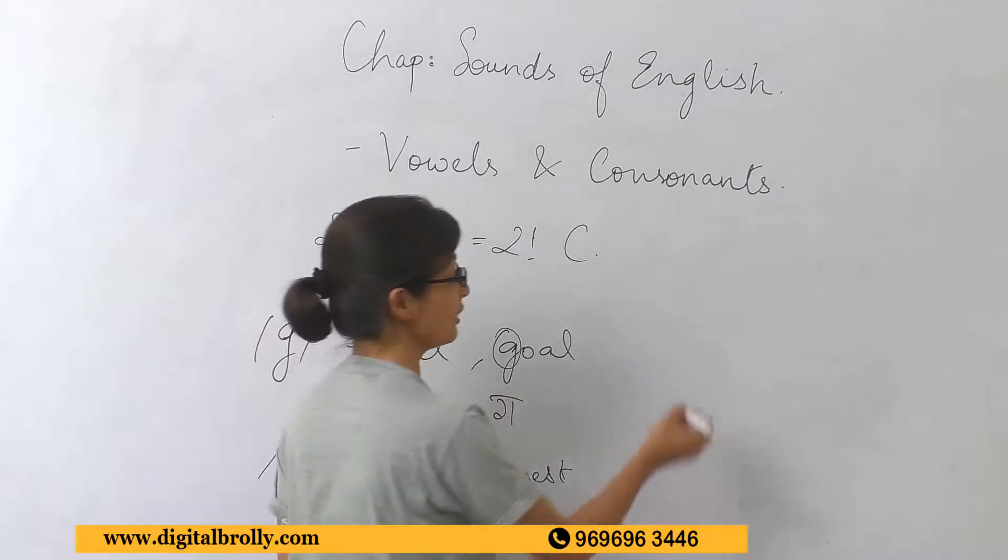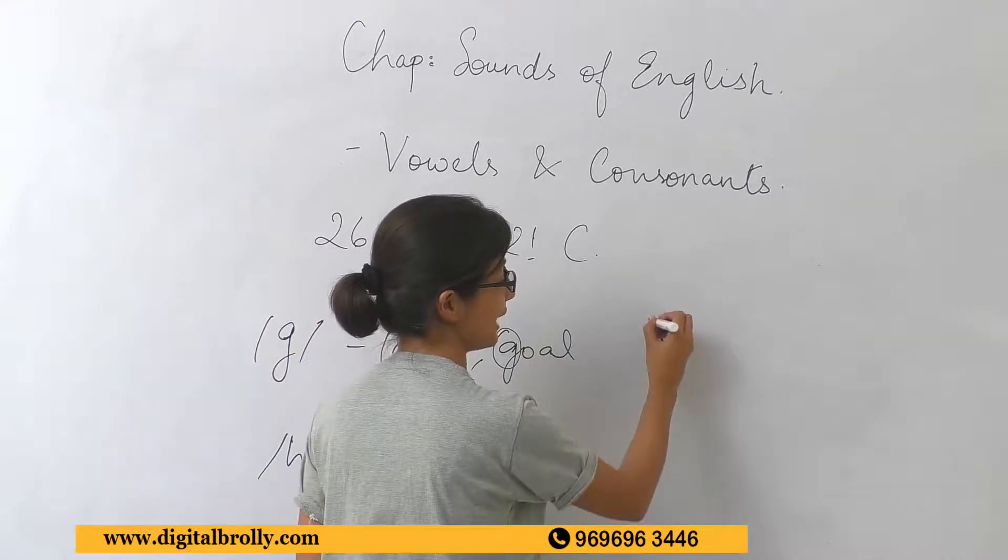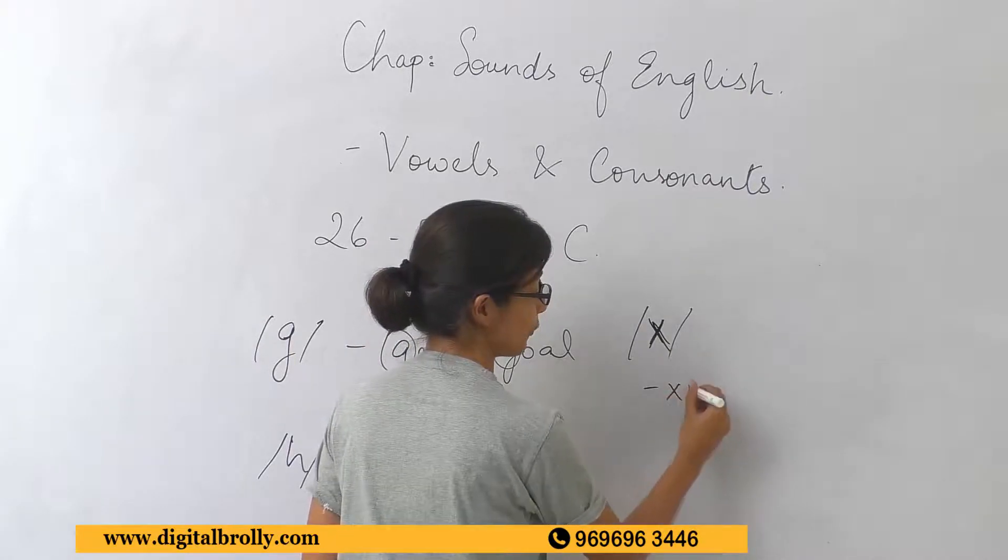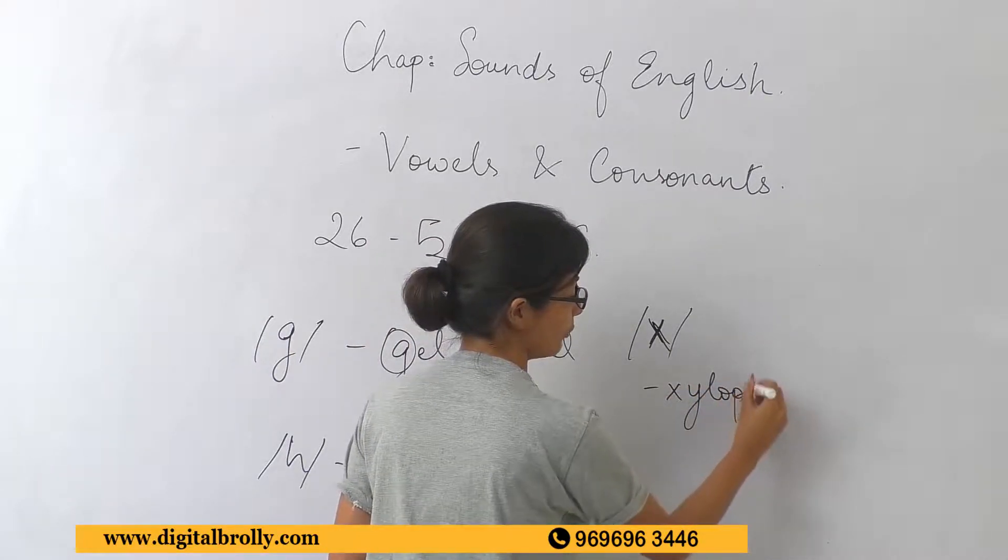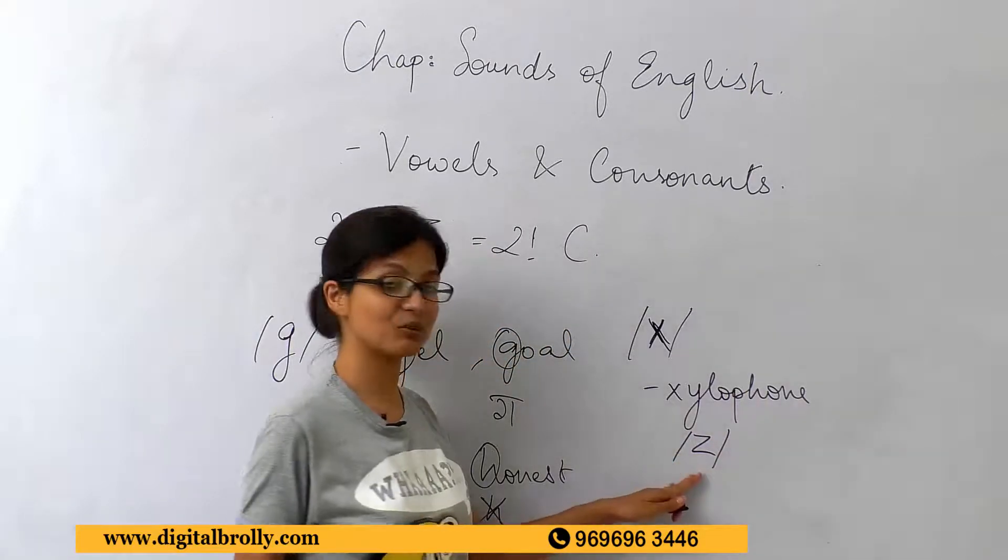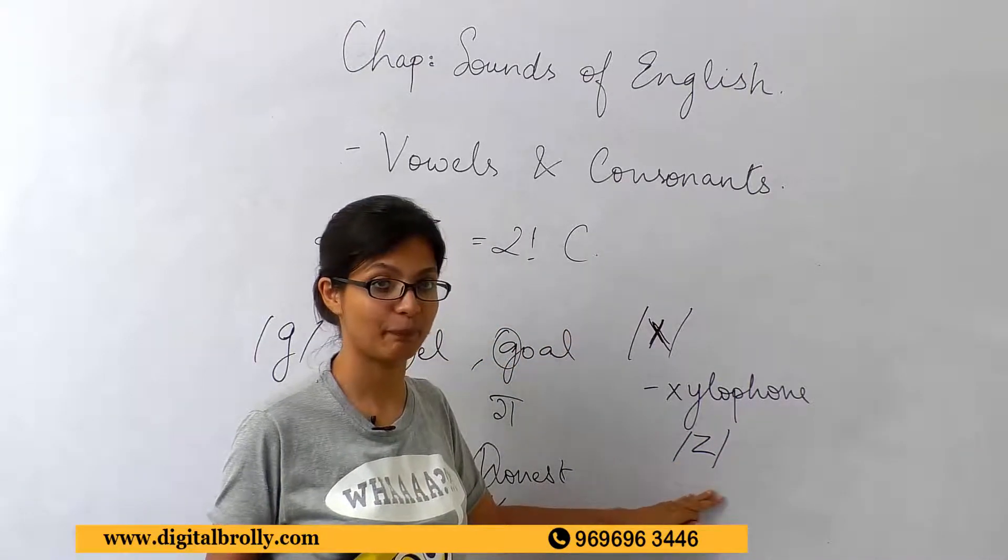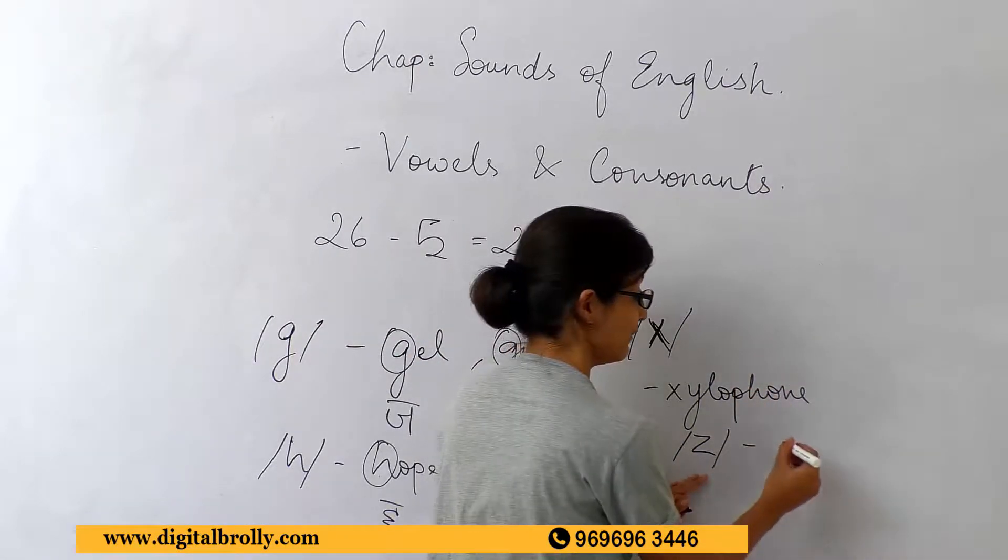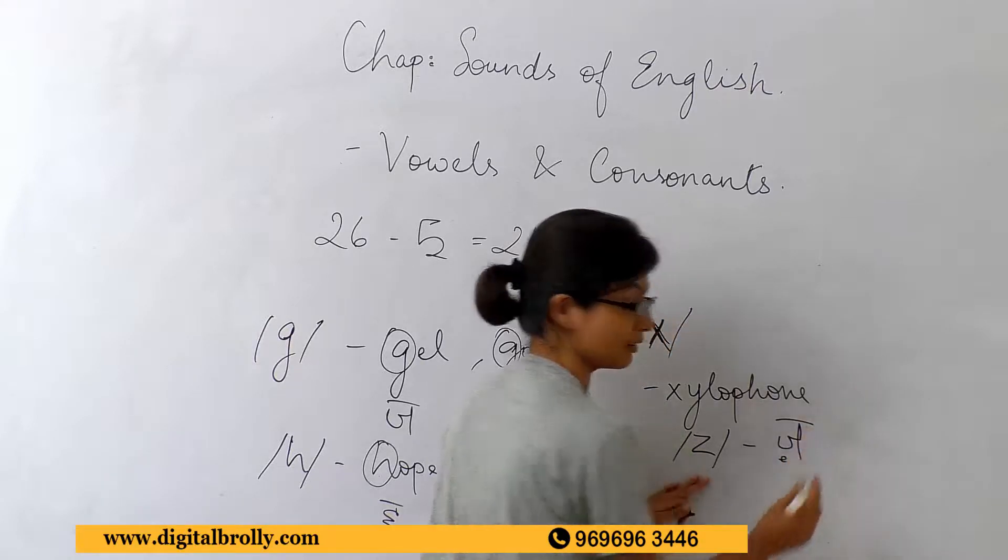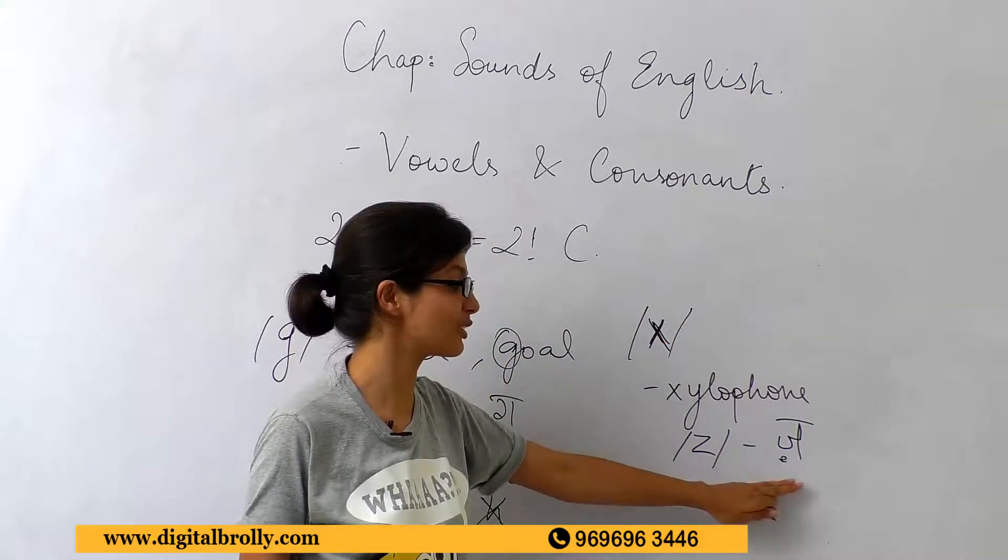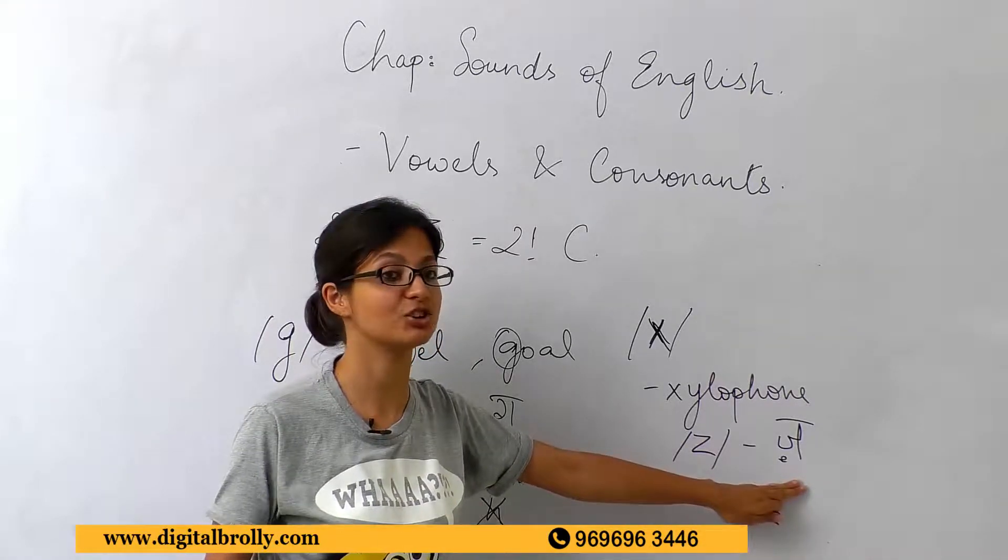Similarly, there are sounds like the sound of X. You have something called xylophone which gives you a Z sound. However, this sound is not there in Hindi. The closest to this sound that we have in Hindi is the Arabic influenced Z as in Zameen. But native Hindi does not have a Z sound at all.